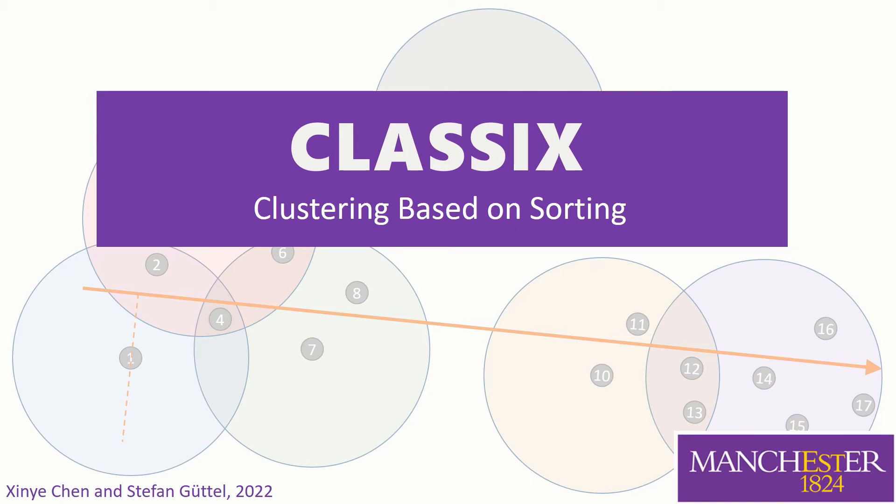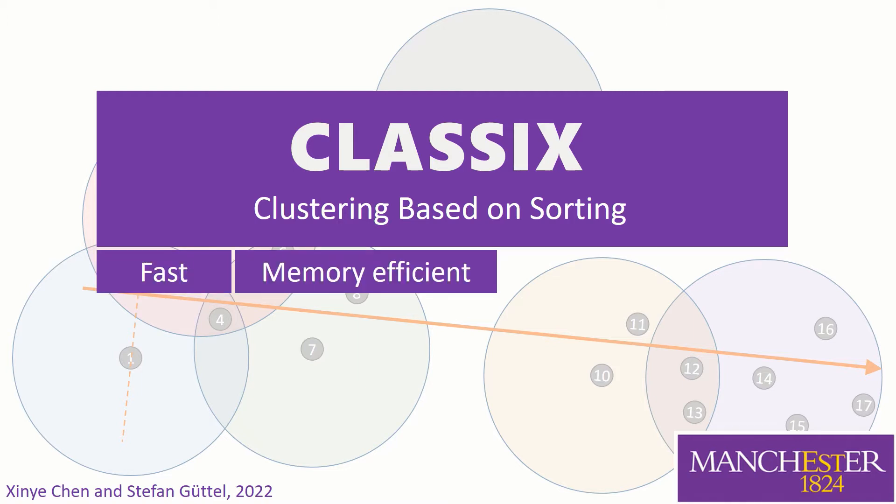Hi, this is a quick overview of CLASSIX, a new clustering method based on sorting. CLASSIX is very fast, has a memory requirement that grows only linearly in the number of data points, and it also generates textual explanations of the computed clusters.